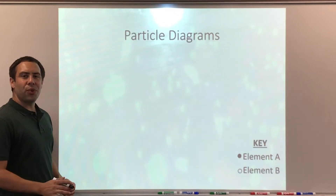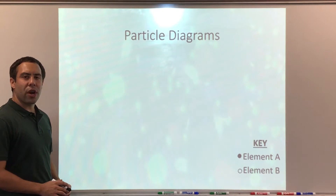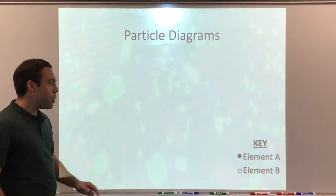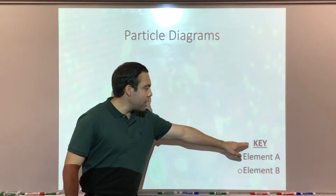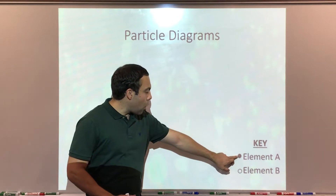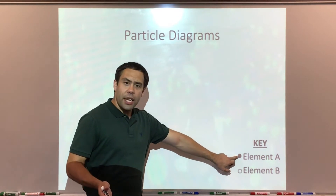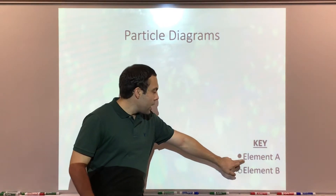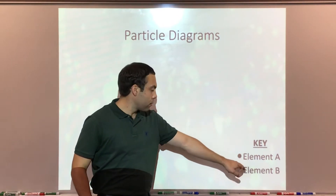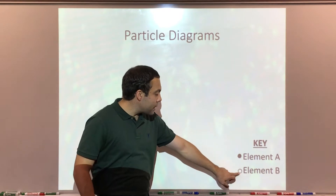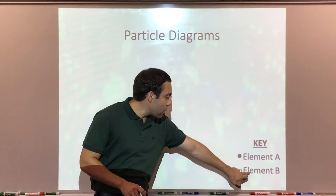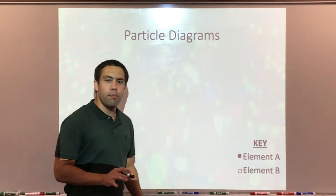Let's draw some particle diagrams together. But first, we must establish a key. For our purposes, this darkened or shaded circle is going to represent element A, whereas this open or clear circle is going to represent element B.